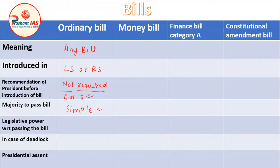The next question is the legislative powers with respect to passing the bill — which house is more powerful. In the matter of ordinary bill, the powers of Lok Sabha and Raj Sabha are equal. Neither house has less power than the other; both have equal powers in passing the ordinary bill.